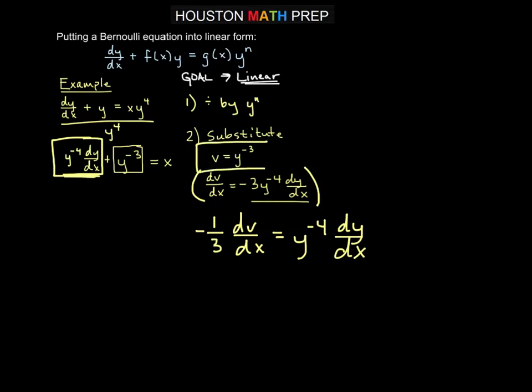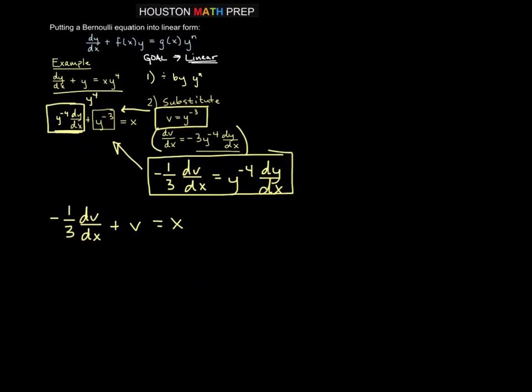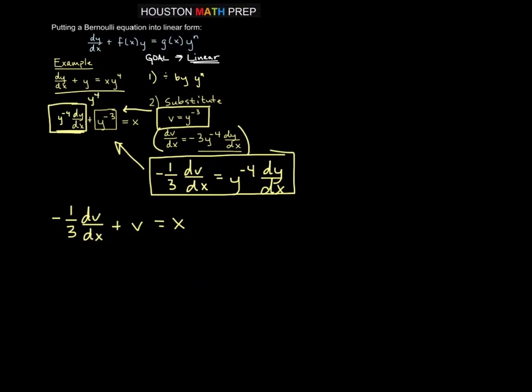So we take our original substitution, v equals y to the minus 3. This expression that we got for the first term, we plug both of those in over here, and we'll get negative 1/3 dv/dx plus y to the minus 3 was v equal to x. And now this is linear, and we just want to do a little adjusting for that negative 1/3. So we'll go ahead and take the entire equation here and we'll multiply by negative 3 to clean up that first term. So that gives us dv/dx minus 3v equal to negative 3x.